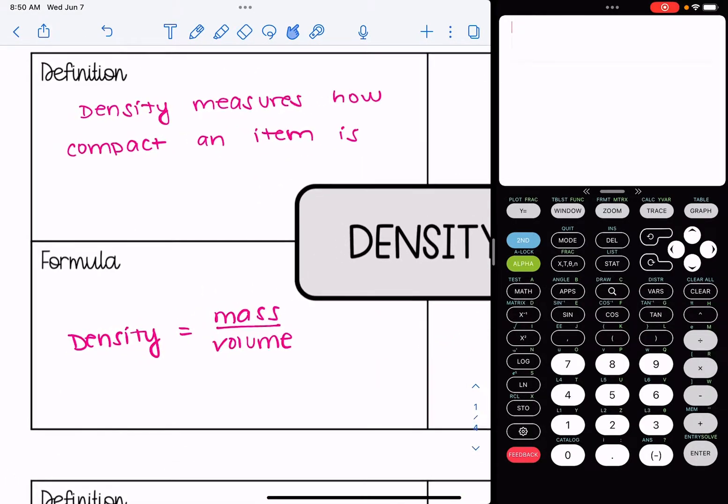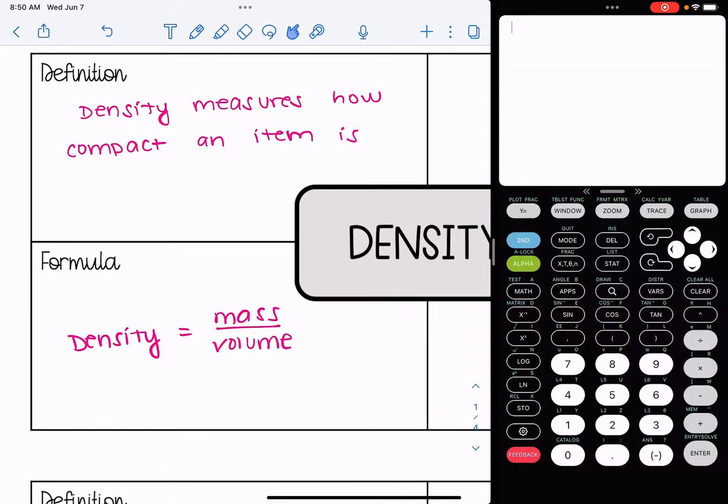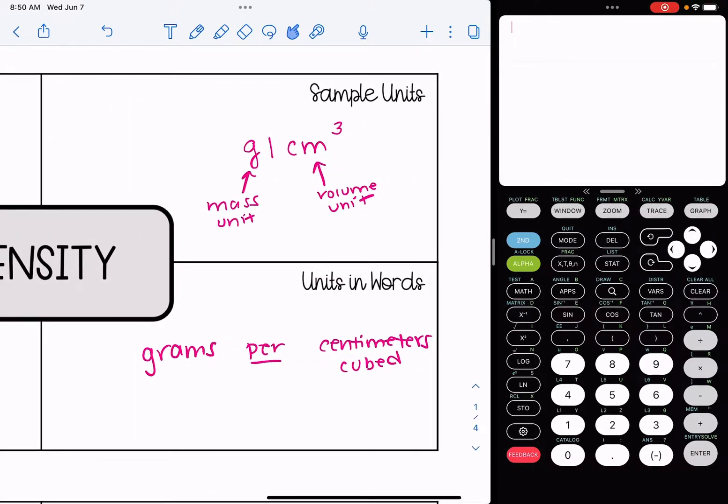So first let's talk about what density is. Density measures how compact an item is. If you think about a 3D shape, let's say a can of soup, how compact the contents are inside. The formula is density equals mass over volume. The unit, since it's mass over volume, might be something like grams slash centimeters cubed. So it's a mass unit over a volume unit, and the way we say that in words would be grams per centimeters cubed. That slash is read as per.